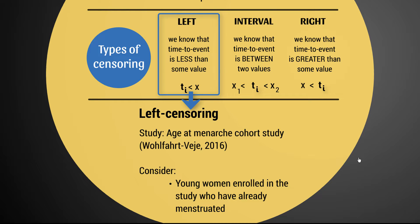Left censoring is much less common, but it can indeed occur. This study is from 2016 by Wolfhard Vece, looking at trying to estimate the age at menarche — the onset of menstruation for women. What happened was they enrolled a cohort of women from certain ages, around 12 or so. Some women were entered a bit later on. Think about what happens if women were enrolled who have already menstruated — if they entered the study at say 14 years old and have already menstruated, you know the time it took them to menstruate was less than 14 years, but you don't know the exact value. So in that case we have left censoring.